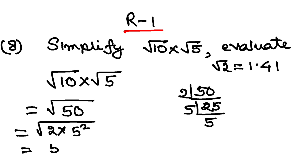So, 5 will go outside. You will be left with 5 root 2. Now, in the question is given, root 2 is 1.41.